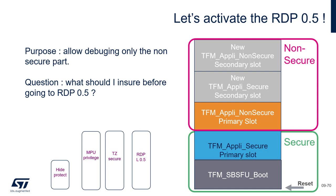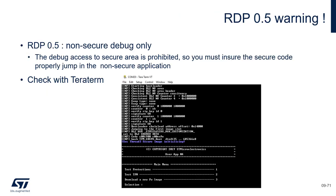You need to have a non-secure application that is executed. That means you need to have a secure application that launches a non-secure application. In that way, the core will be in non-secure mode and you will be able to connect. So please double-check with your serial terminal — press the reset button of your target and check the traces to ensure that you have a non-secure application running before continuing.